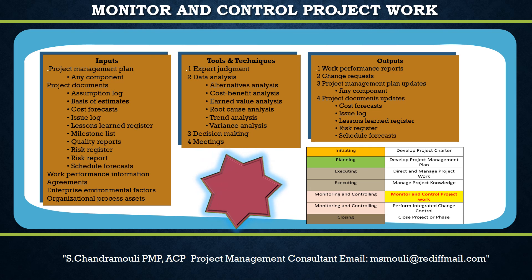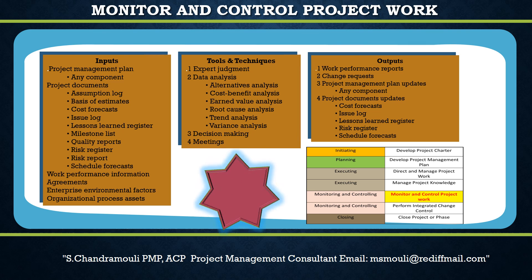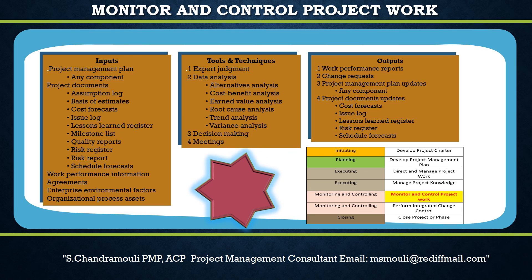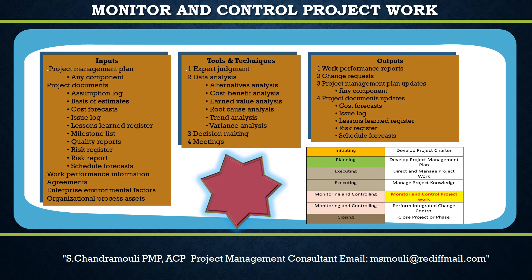The next input is Organizational Process Assets. Organizational process assets may include but are not limited to: organizational communication requirements; financial control procedures (e.g., time reporting, required expenditure and disbursement reviews, accounting codes, and standard contract provisions); issue and defect management procedures defining issue and defect controls, identification and resolution, and action item tracking; and change control procedures.